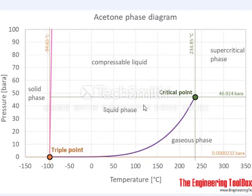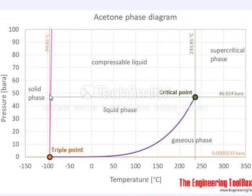The next phase diagram is acetone. This one isn't particularly exciting, but I wanted to include a solvent and to show that the line between solid and liquid is typically sloped opposite to water — at higher pressures the melting point increases. Acetone also has a critical point at a lower pressure than CO2 but at a quite a bit higher temperature, which is interesting to note.